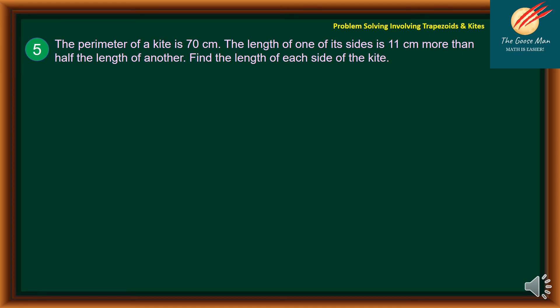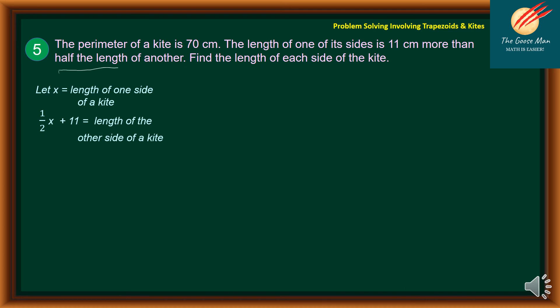Let's move on to Problem Number 5. The perimeter of a kite is 70 centimeters. The length of one of its sides is equal to 11 centimeters more than half the length of another. Find the length of each side of the kite. We will let X equal to the length of one side of the kite. To represent the other side, based on the description, half the length of another is one half of X, and 11 more than that gives us one half X plus 11. This is the length of the other side. In our illustration, two sides are X and two sides are one half X plus 11.